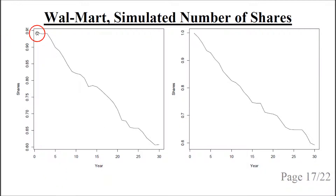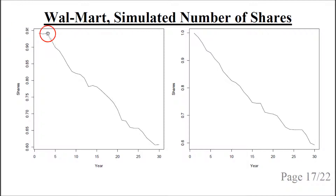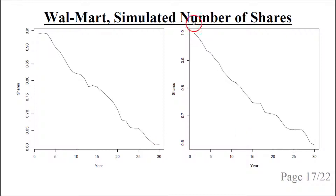This shows the simulated number of shares. They start at 1, again because it's normalized, and are then simulated in terms of share buyback and issuance. Over the 30-year period they go from 1 down to about 0.6 in both simulations.